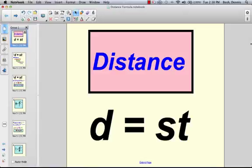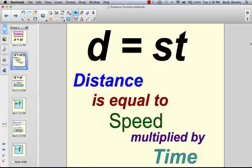Now, you look at this as d equals st. But what it truly means is that the distance is equal to the speed multiplied by the time.